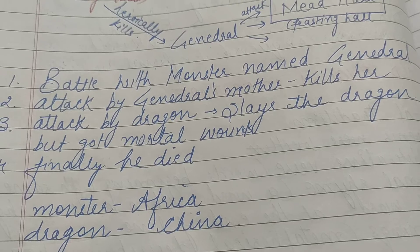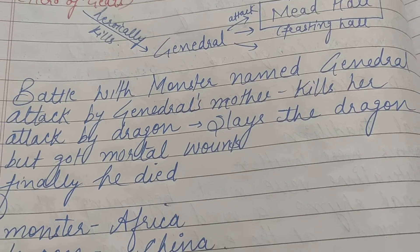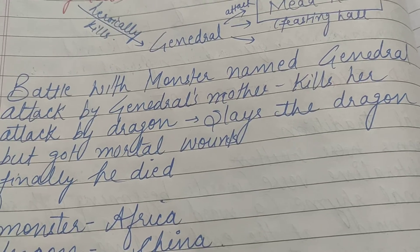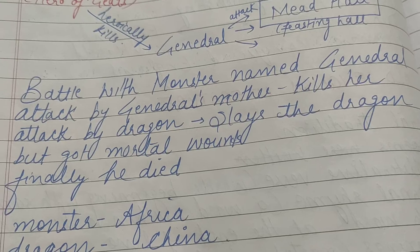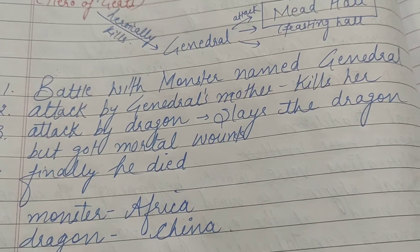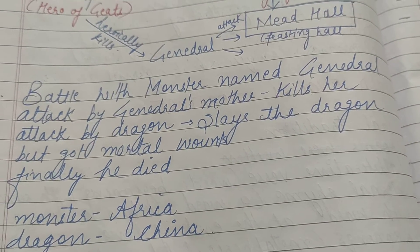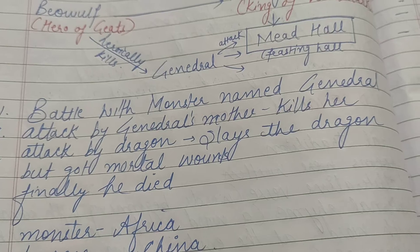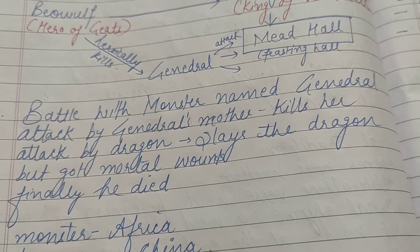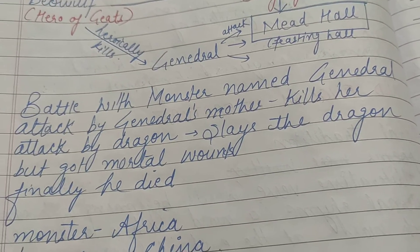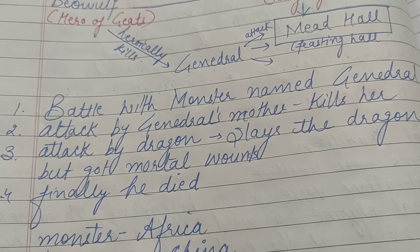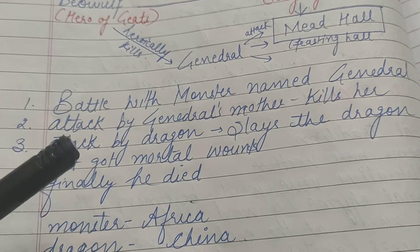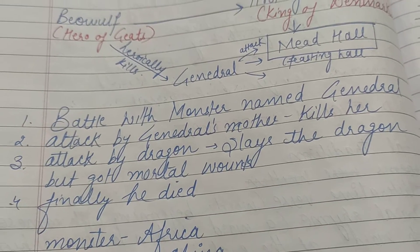Beowulf ke andar teen important incidents hote hain: battle with monster Grendel, battle with Grendel's mother, and attack of dragon. Jab Grendel ki death hoti hai to Grendel ki mother Beowulf ko maarne ki koshish karti hai, aur Beowulf Grendel ki mother ko bhi maar deta hai. Phir Beowulf jab in rakshasas ko maar kar apne Geats mein jaata hai to usko Geats ka raja bana diya jaata hai. Kuch time baad Beowulf ko dragon attack karta hai, Beowulf dragon ko maar dalta hai, but dragon se usko kuch mortal wounds aate hain jis wajah se Beowulf ki death ho jaati hai.